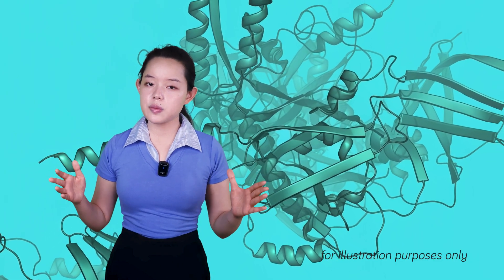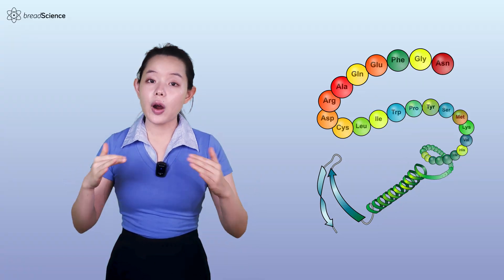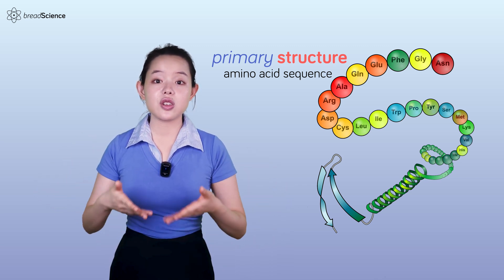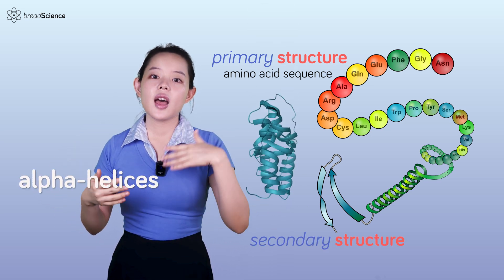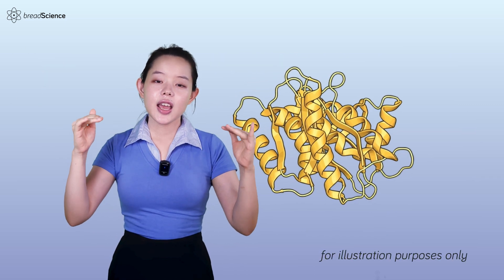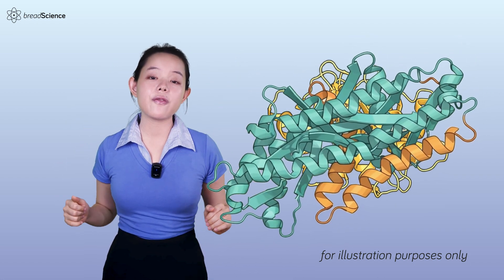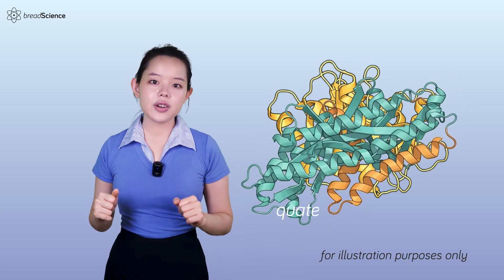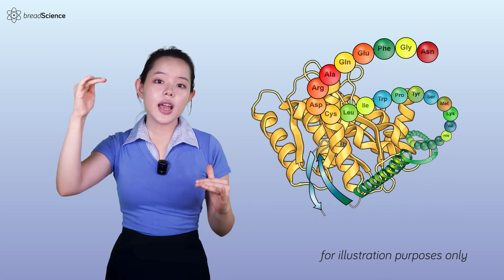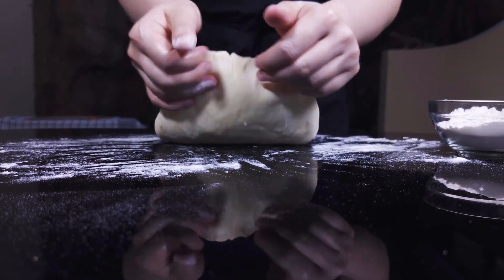All these interactions and bonds contribute to the unique four-level structural organization of gluten. At the primary level, gluten proteins are composed of amino acid sequences. These amino acid chains fold into secondary structures like alpha helices, beta turns, and beta sheets. The overall three-dimensional shape of a polypeptide chain is referred to as its tertiary structure. Finally, multiple polypeptide chains can assemble to form a functional protein complex known as the quaternary structure. These complex interactions between different levels of protein structure give glutenin its unique properties and enable it to form the elastic network that is crucial to bread making.